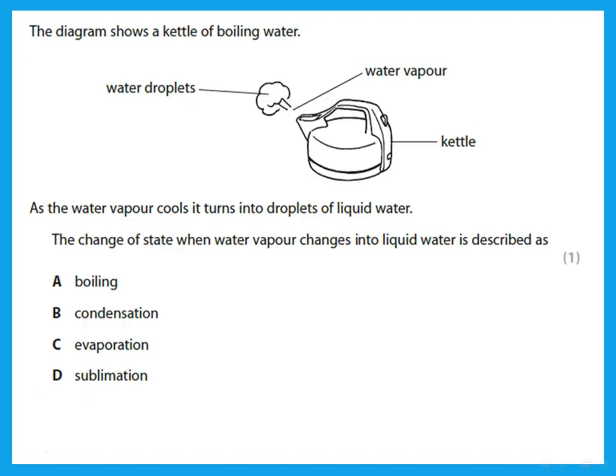This question shows a kettle of boiling water. As the water vapor boils, it turns into droplets of liquid water. The question asks for the change of state when water vapor changes into liquid water. Remember that water vapor is the gaseous state of water. Changing that into a liquid is called condensation.